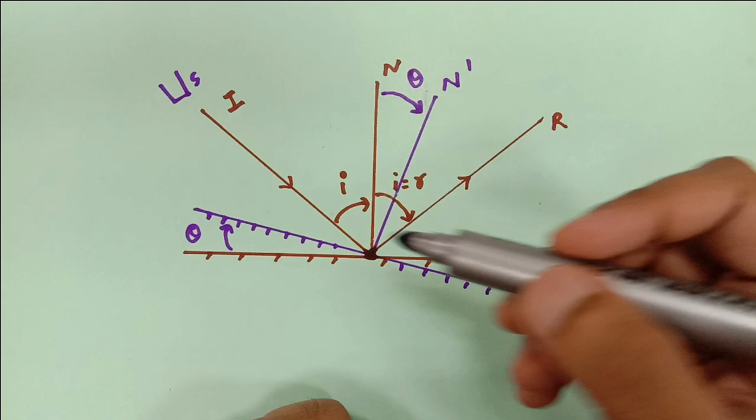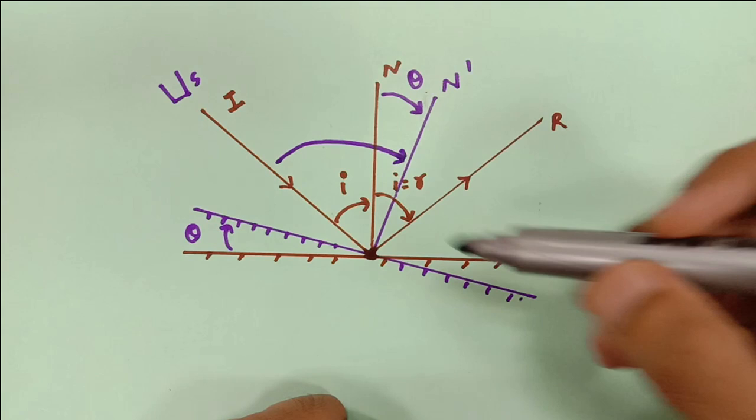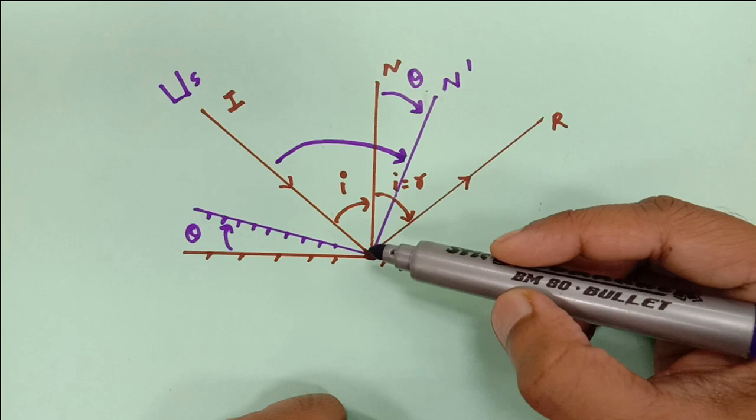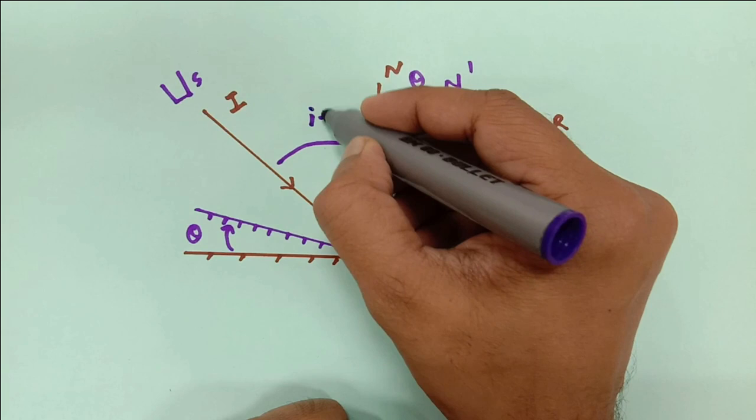Now let's measure the new angle of incidence from the normal. The incident ray stays there itself. This is the new location of the normal, and as you can see, this angle is I.